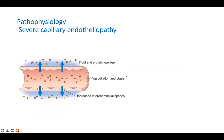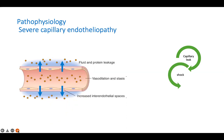The main pathophysiology in dengue is severe capillary endotheliopathy — the blood vessel endothelium is damaged, as a result of which fluids and proteins leak out through the capillaries. This causes the intravascular volume to decrease, leading to shock.